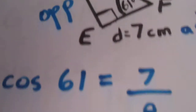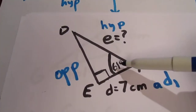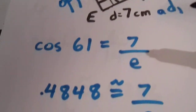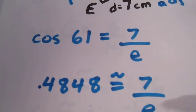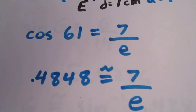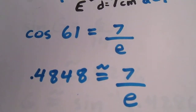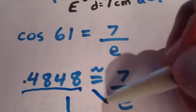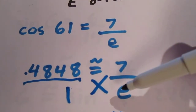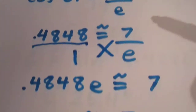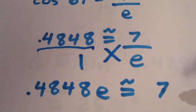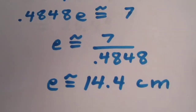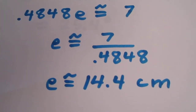We come back to our diagram and say that the cosine of 61 is equal to 7 over E. Since the cosine of 61 is approximately 0.4848, we can say 0.4848 is approximately 7 over E. We then do our cross-multiplying step: E times 0.4848 is approximately 7. We then divide each side by 0.4848, and we get that E is approximately equal to 14.4 centimeters.